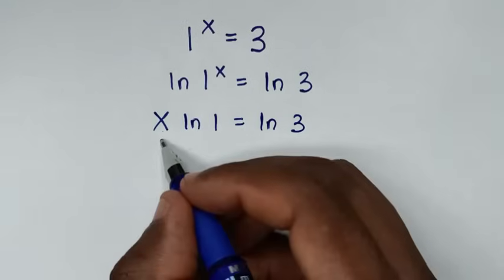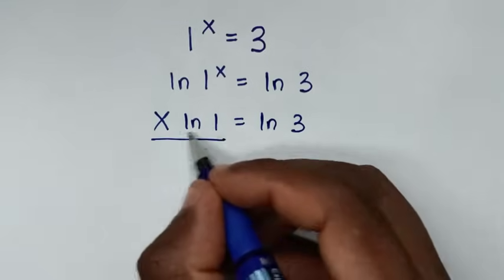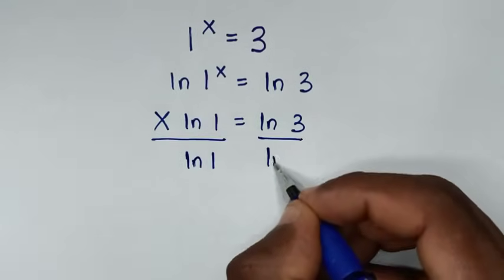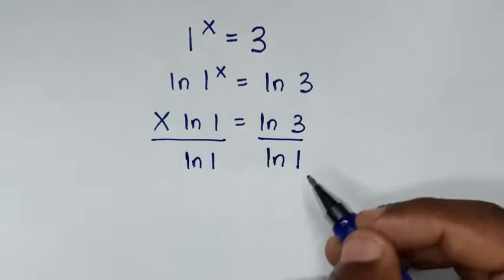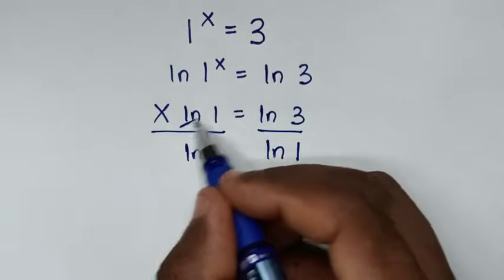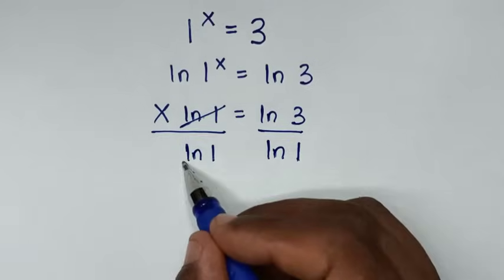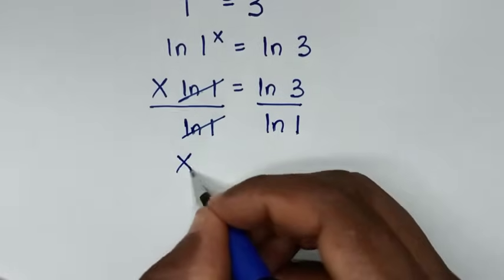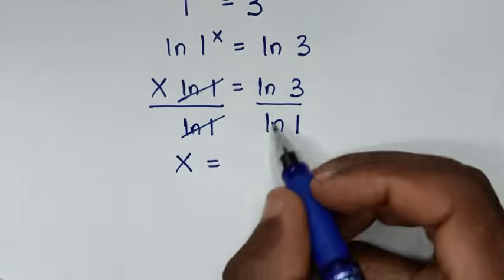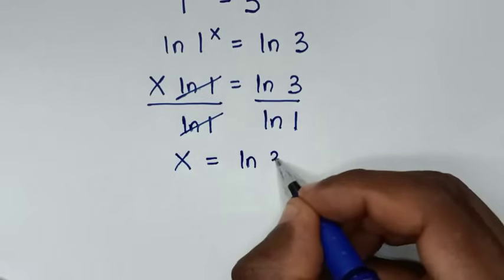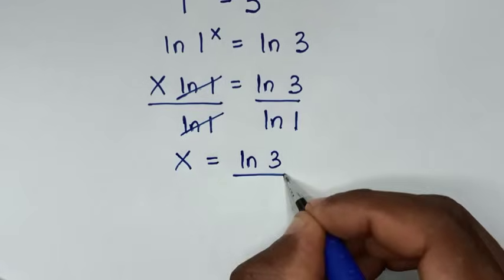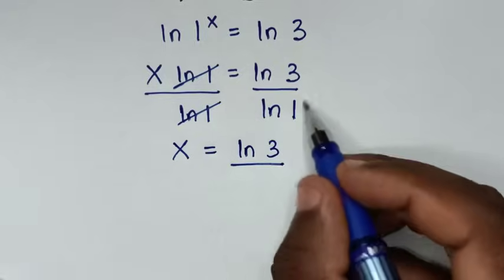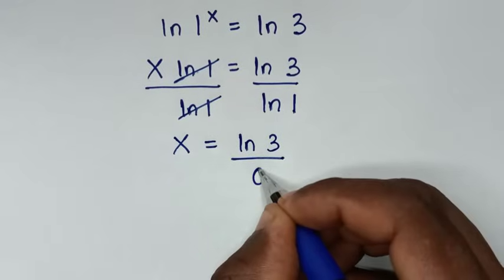Then, we'll divide by ln of 1 on both sides. So this ln of 1 will cancel, and it will be x is equal to ln of 3 over ln of 1, which is 0.